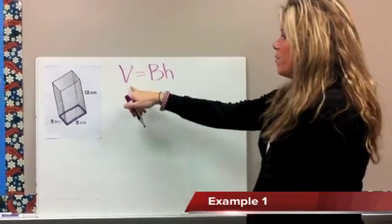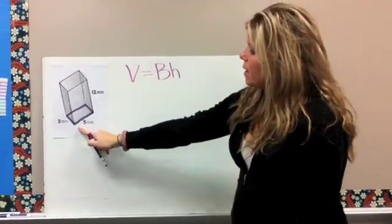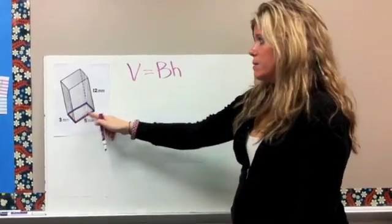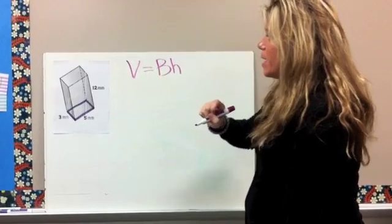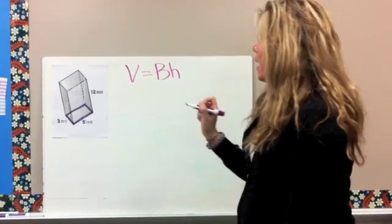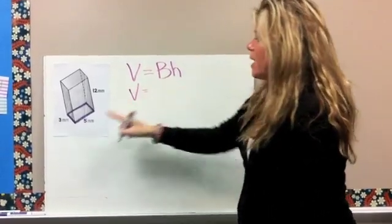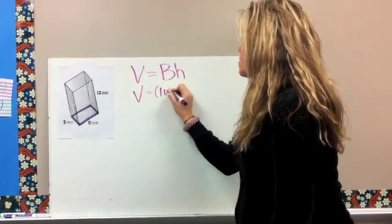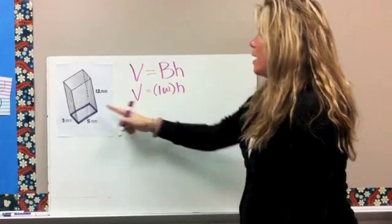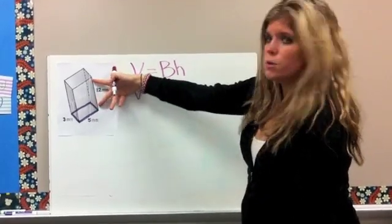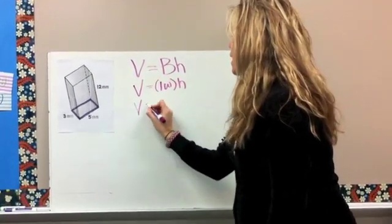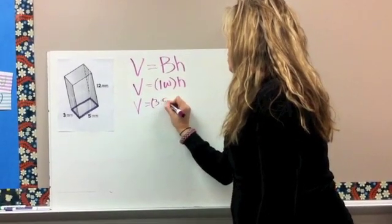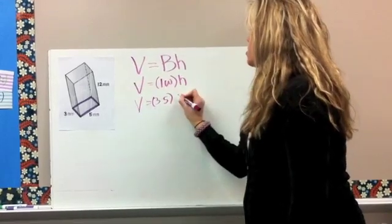So having our formula here for volume, I've highlighted the base here of this figure for you. This is going to be a rectangular prism, and our capital B is the area of that base, so my formula for that is length times width times the height of the prism. The height is between the two bases. Length times width, which is 3 times 5, times the height, which is 12.